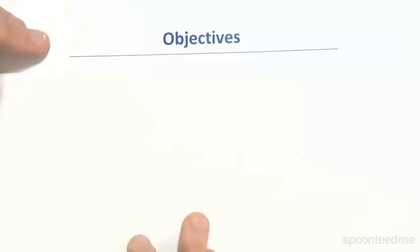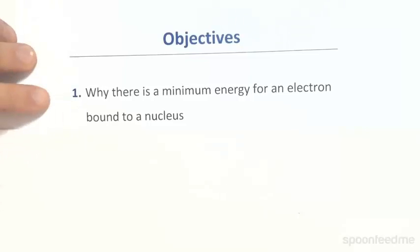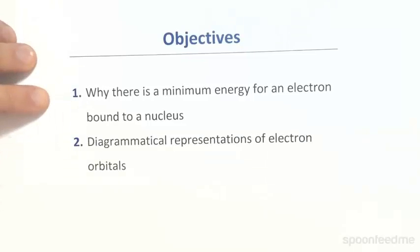Hi! In this video, I'm going to be taking a look at two main objectives. I'm going to be looking at why there is a minimum energy for an electron bound to a nucleus, and I'm also going to be looking at diagrammatical representations of electron orbitals.